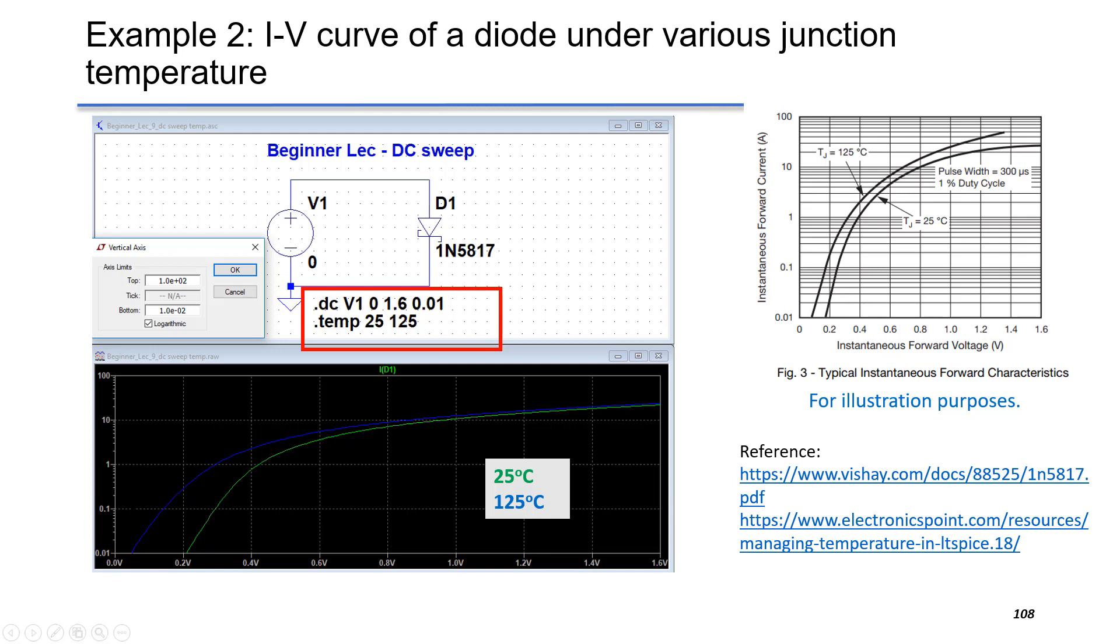It shows that for the same given forward current, if the device has higher temperature, it has smaller voltage drop. In other words, at the same forward voltage, hotter diode will conduct more current.